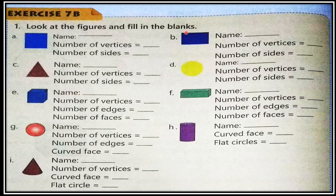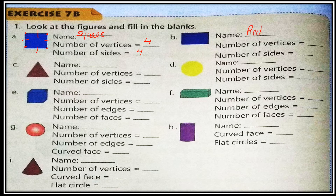Now look at the figures and fill in the blanks. First figure is a square — it has four vertices and four sides. Next is a rectangle — it also has four vertices and four sides. Then a triangle — number of vertices is three and number of sides is also three.